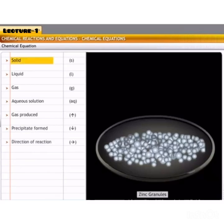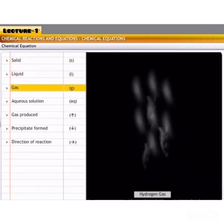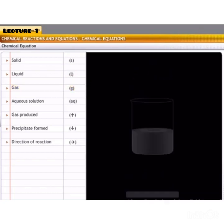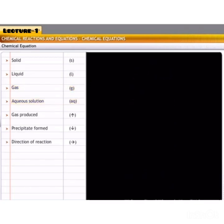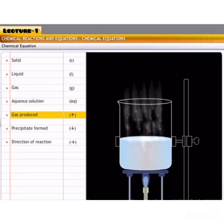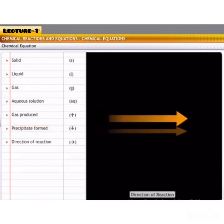So, in a chemical equation, we always represent solid as S, liquid L, gas G, aqueous solution AQ, gas produced by upward arrow, precipitate formed by downward arrow, and the direction of the reaction by an arrowhead pointing towards the product. Thank you.